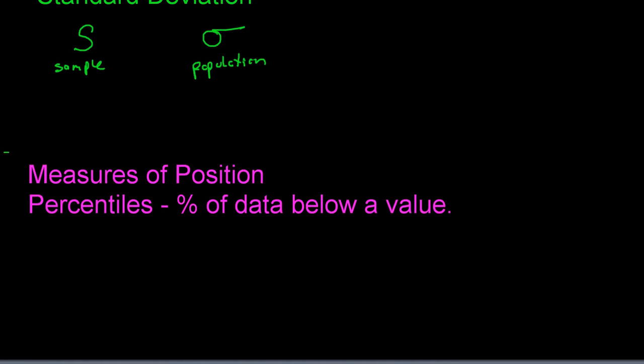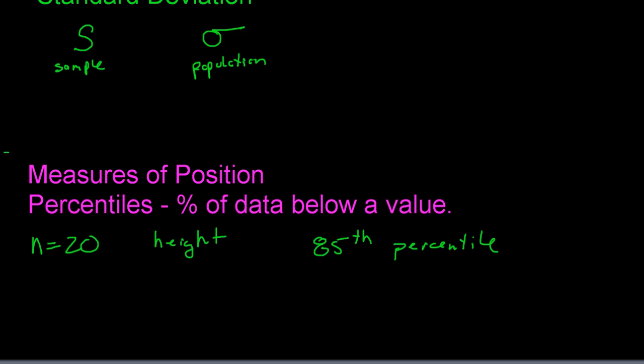Another measure of position is the percentile. A percentile tells you exactly where your data is located by describing the percent of data below it. For example, if I fall at the 85th percentile in height, that means 85% of people in the sample are shorter than me, and 15% are taller. If I were at the 10th percentile, then 10% are below me and 90% are above me.